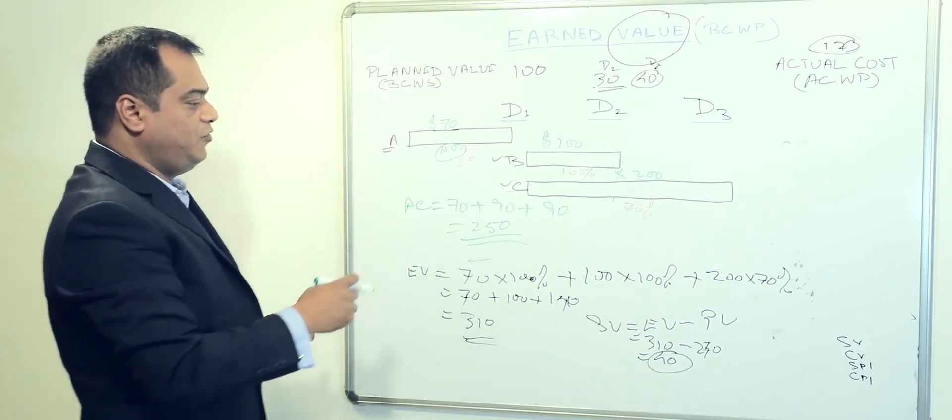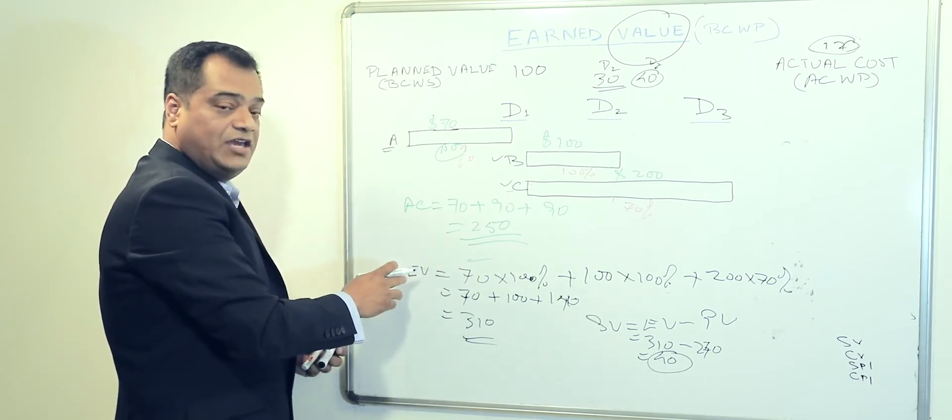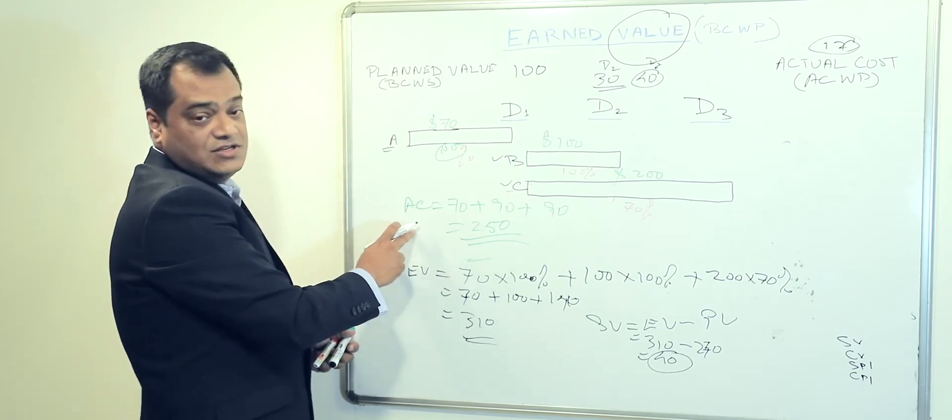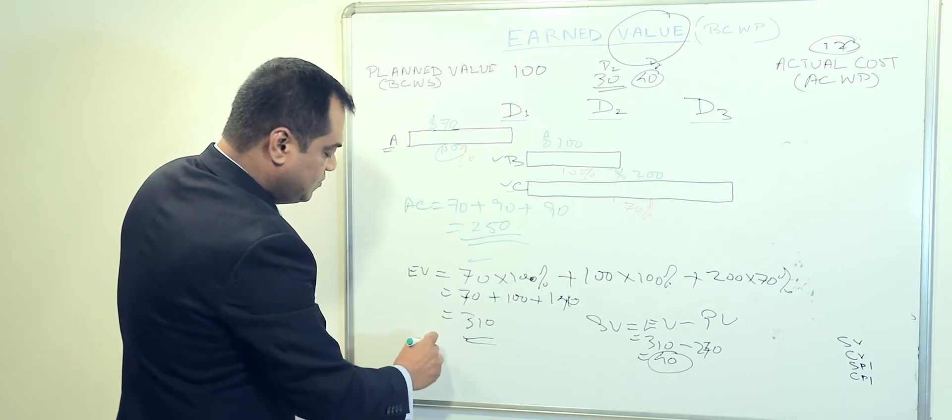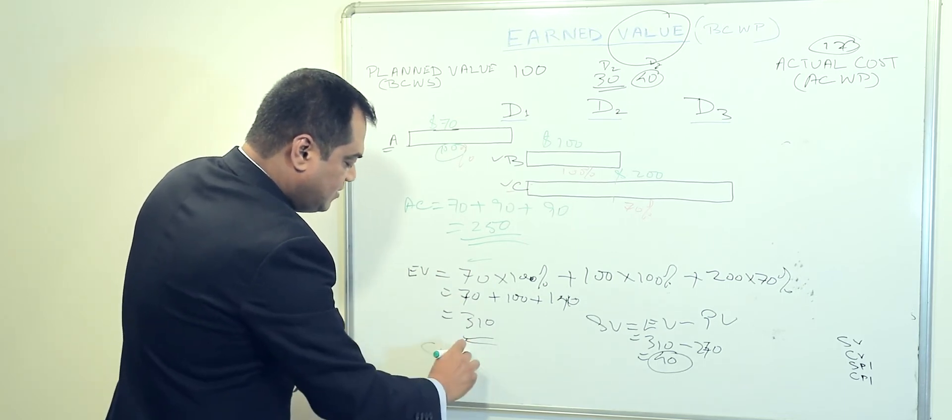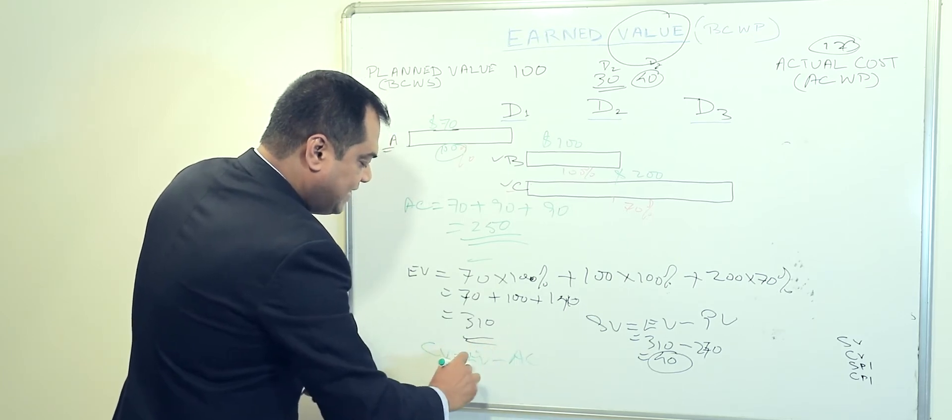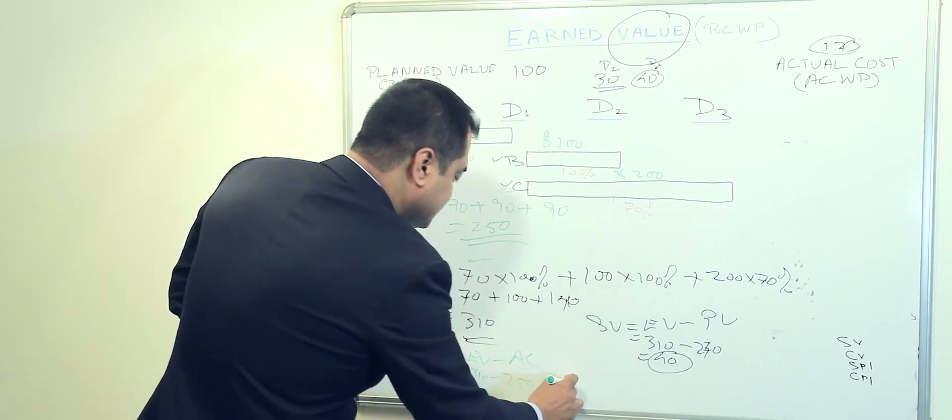Now if you want to see what is the cost variance, obviously you again want to measure what is your earned value minus the actual cost value. So now if you make the difference between the two, cost variance is earned value minus actual cost, and that makes it 310 minus 250. That is 60.